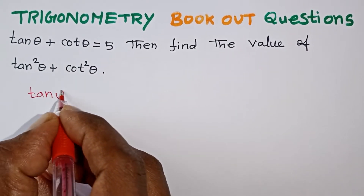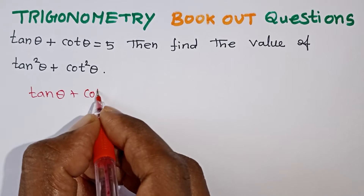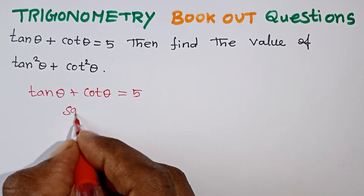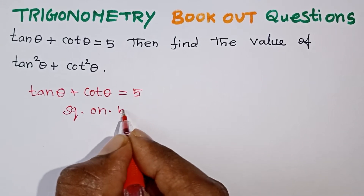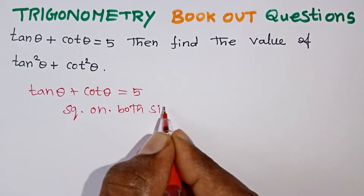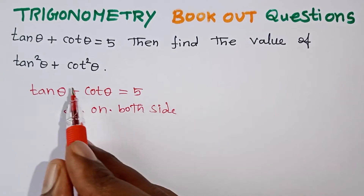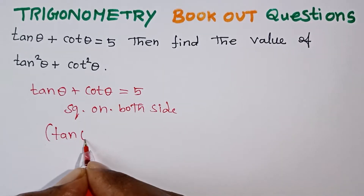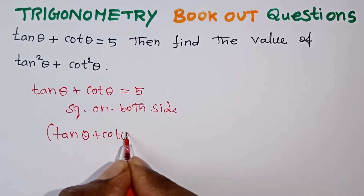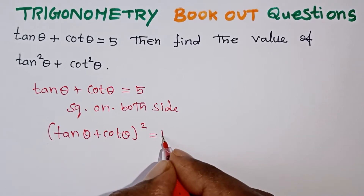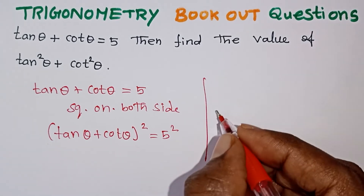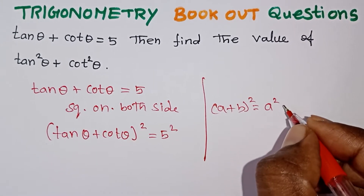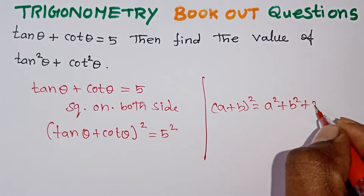If you put a square on both sides, you use the identity: tan θ plus cot θ, the whole square equals 5 squared. Expanding using the (a + b)² formula — a² plus b² plus 2ab — where a is tan θ and b is cot θ.